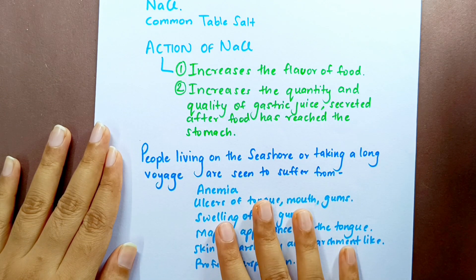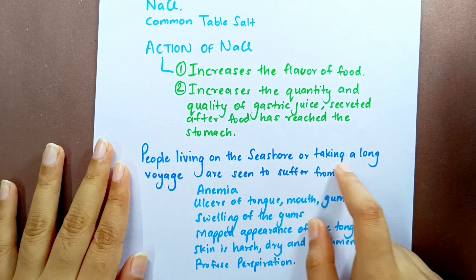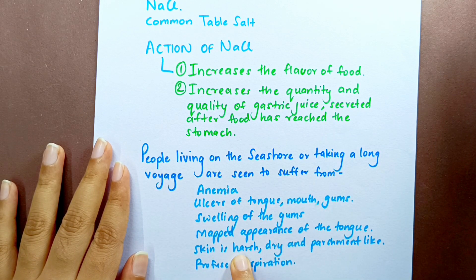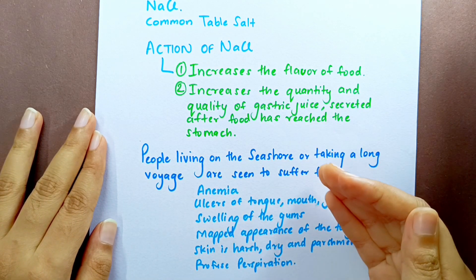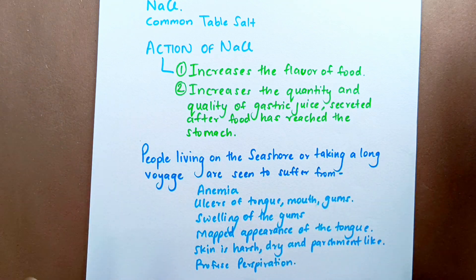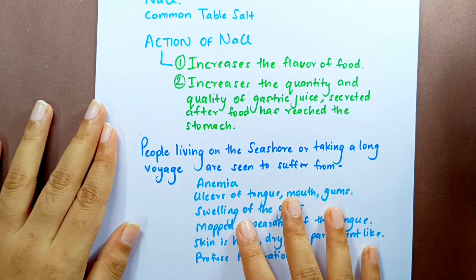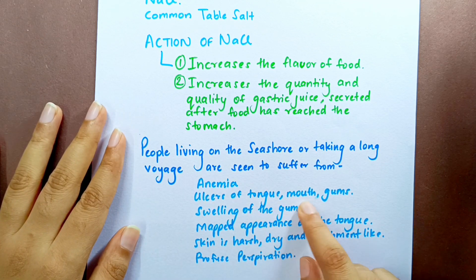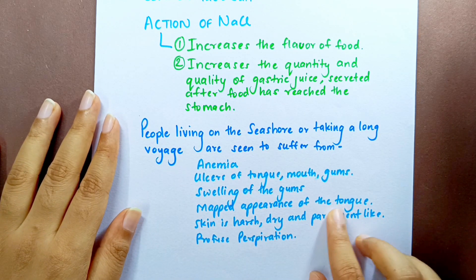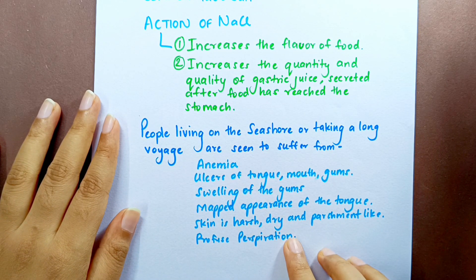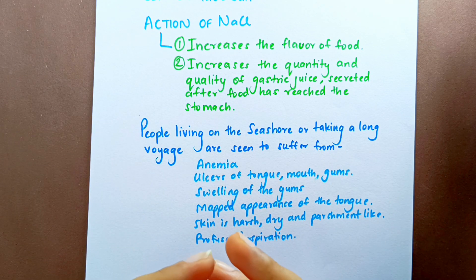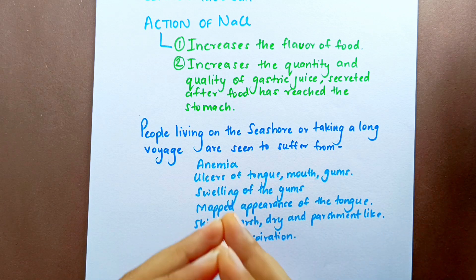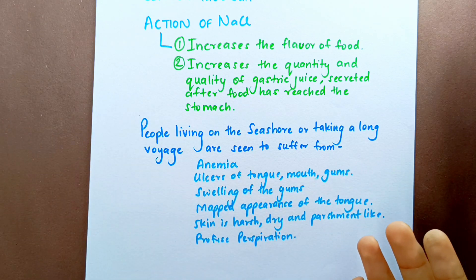Next, he tells us that people who live on the seashore or who take long voyages — being around or in the sea, which is salt water — suffer from certain conditions. These symptoms are: anemia, ulcers of the tongue, mouth and gums, swelling of the gums, mapped appearance of tongue, skin that is harsh, dry and parchment-like, and profuse perspiration. These are the symptoms Natrium Muriaticum is capable of producing when potentized.